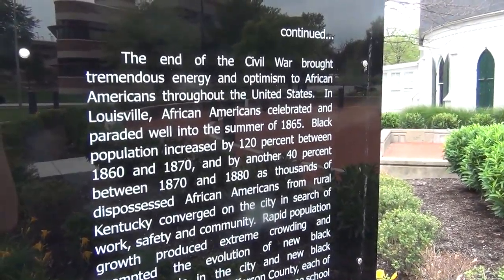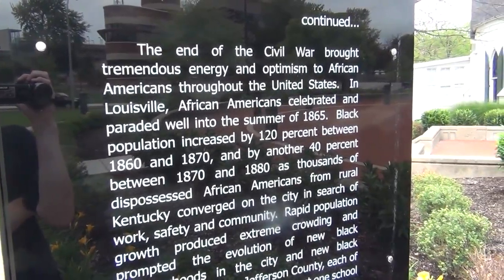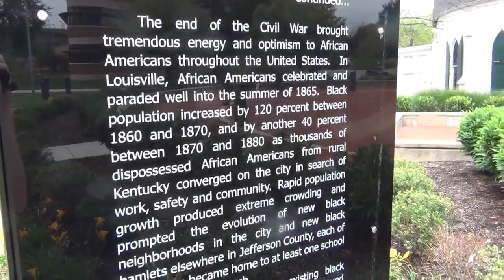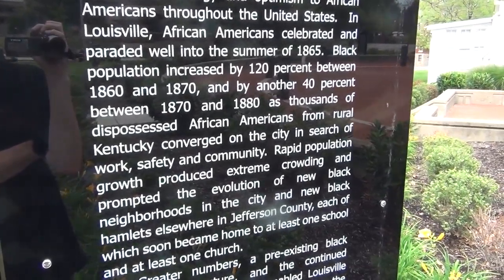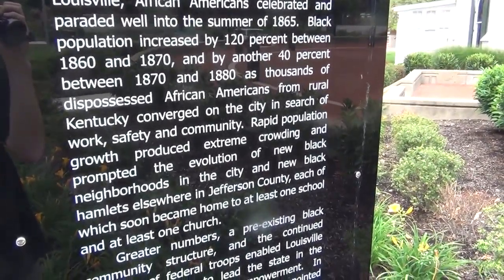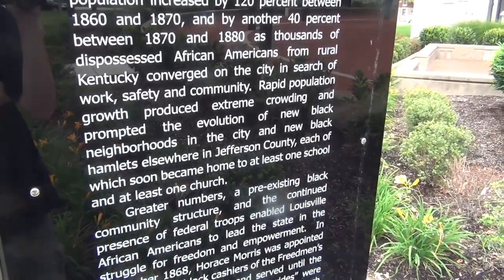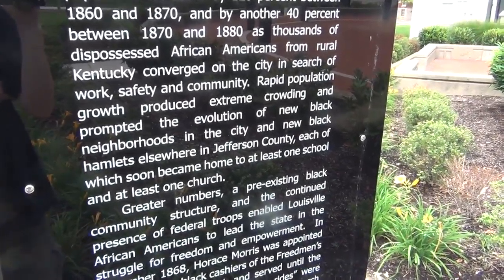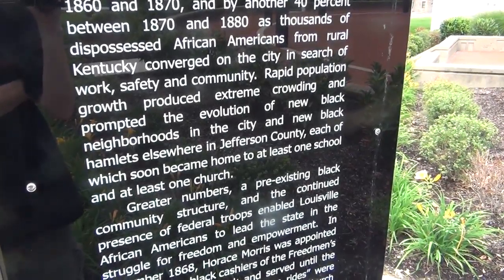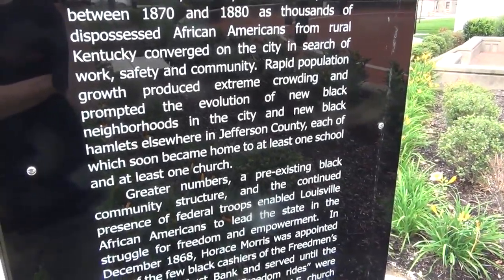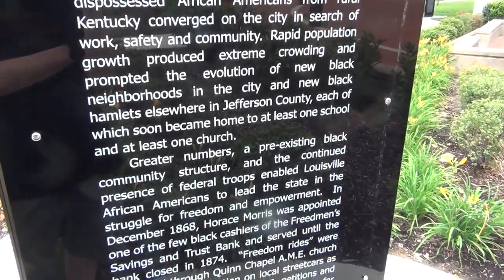The end of the Civil War brought tremendous energy and optimism to African Americans throughout the United States. African Americans celebrating paraded well into the summer of 1865. The black population increased by 120% between 1860 and 1870, and by another 40% between 1870 and 1880, as thousands of dispossessed African Americans from rural Kentucky converged on the city in search of work, safety, and community. Rapid population growth produced extreme crowding and prompted the evolution of new black neighborhoods in the city and new black hamlets elsewhere in Jefferson County.